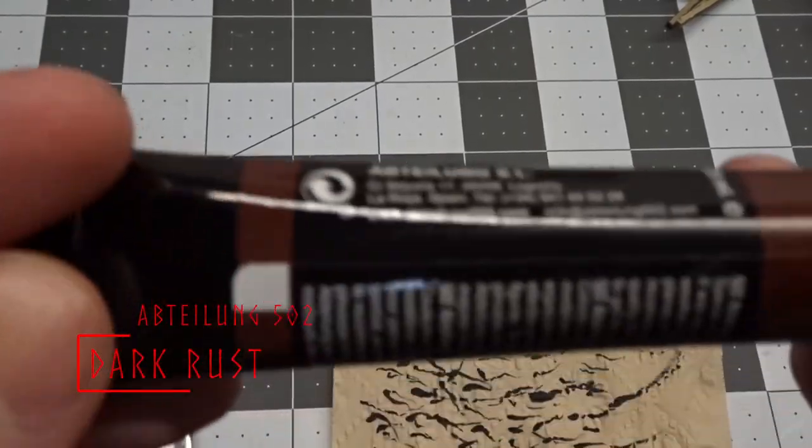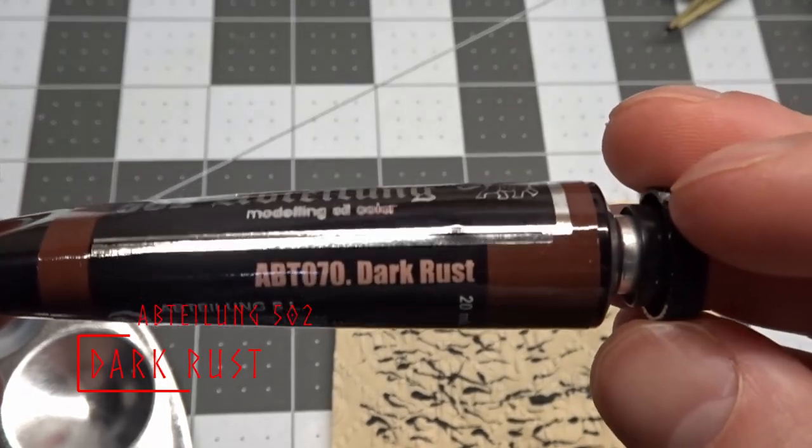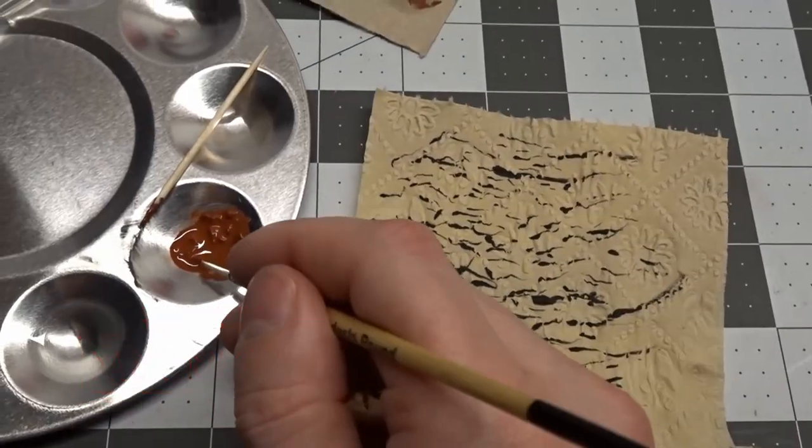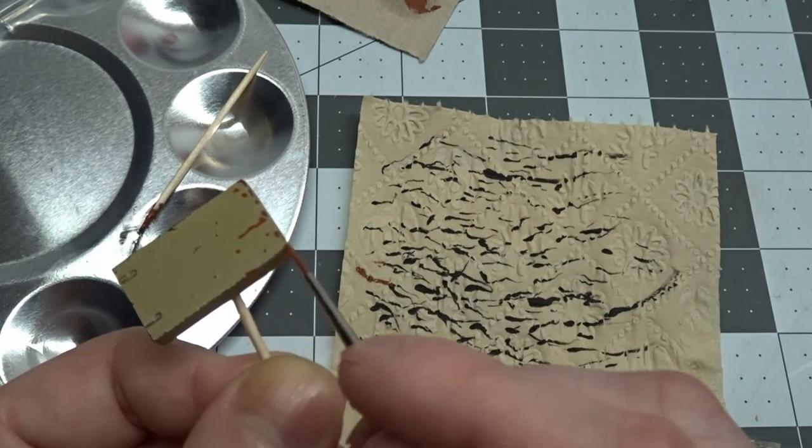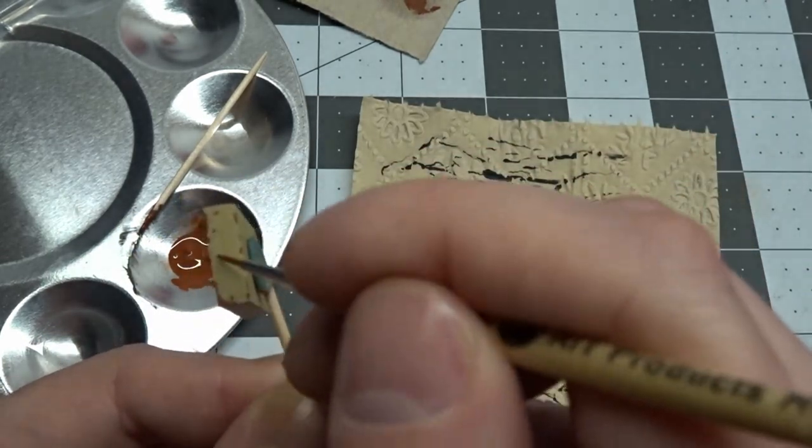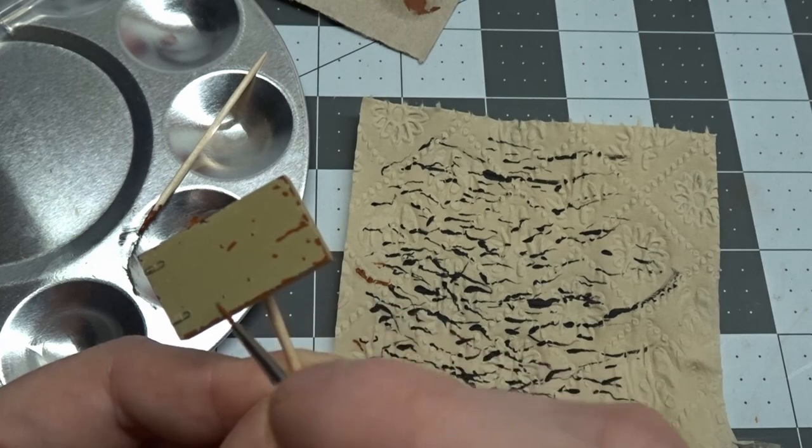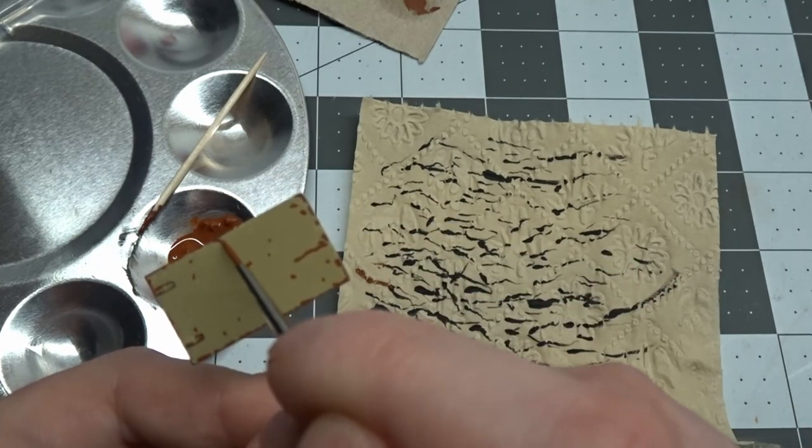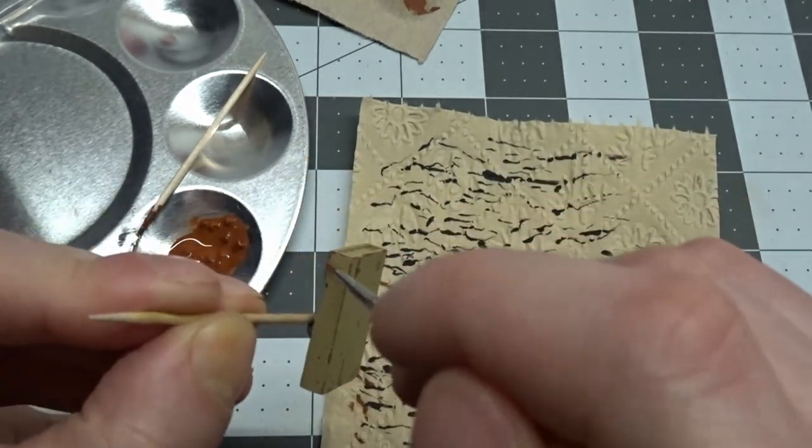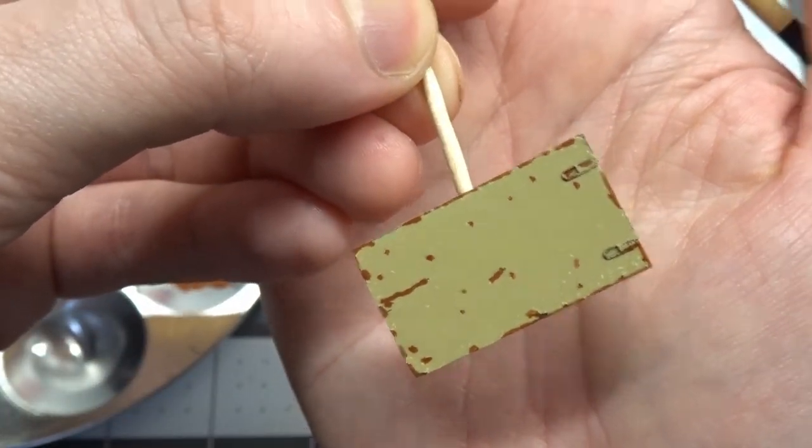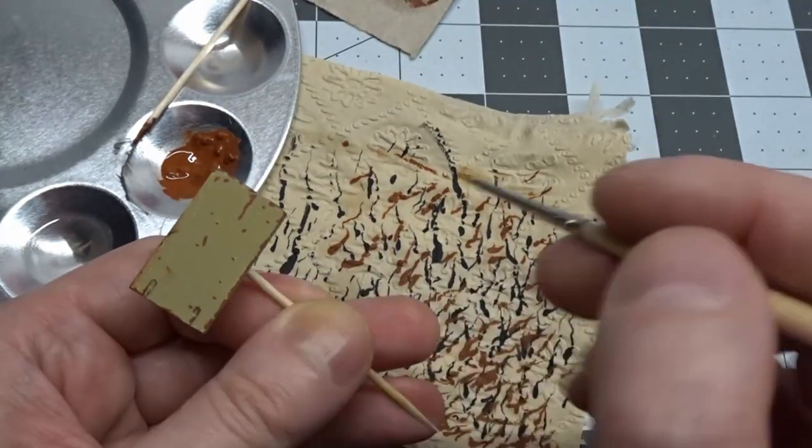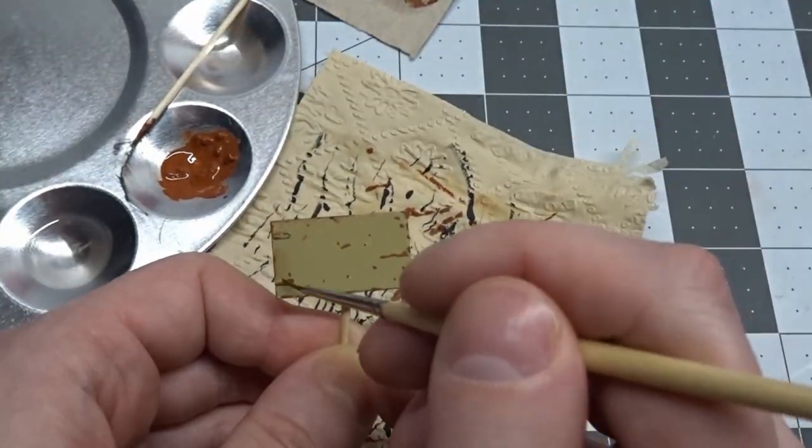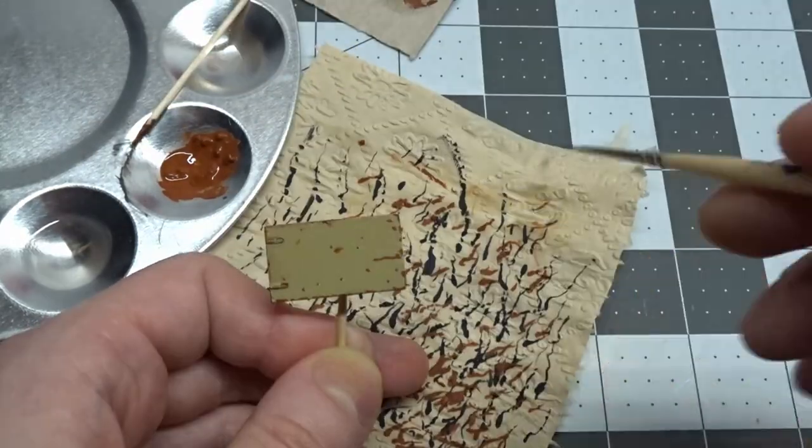Now to do some rust tones using Abteilung 502 Dark Rust Oil Paint. I let a drop of the oil paint sit on a piece of cardboard for a few hours to draw out the excess oil before adding it to my palette, and mixing it with a few drops of BMS Oil Expert matte. I block this in over the dark chip spots. After this is dried for about 30 minutes, I come in with an older 3-0 brush, moistened with some odorless thinner, and tidy everything up.